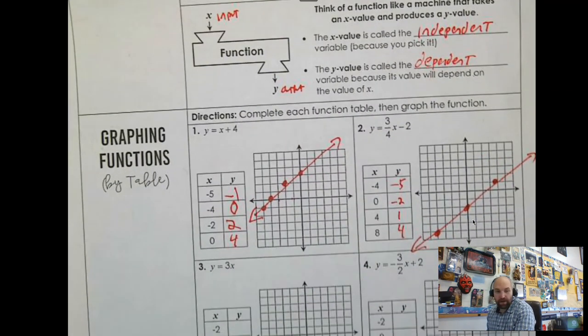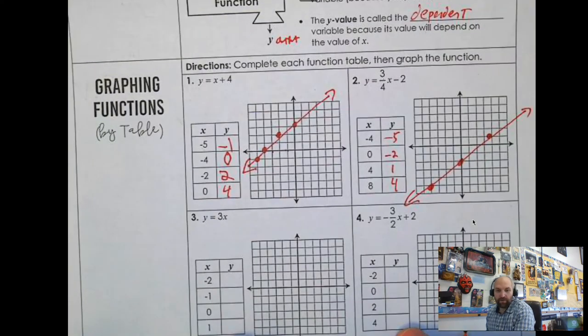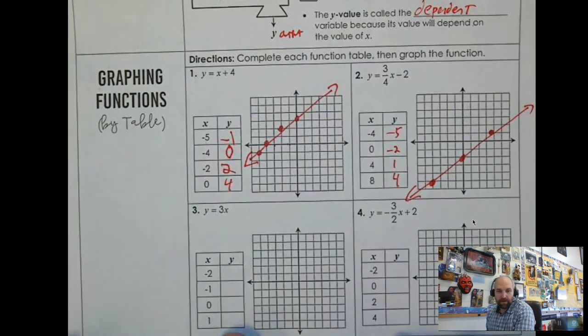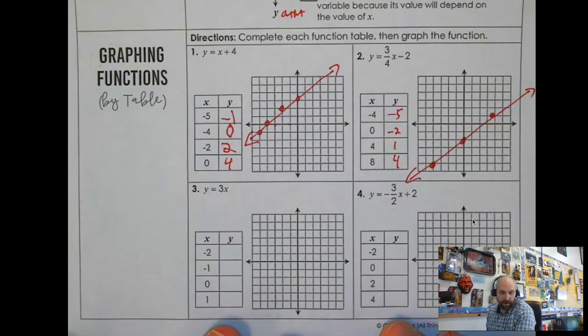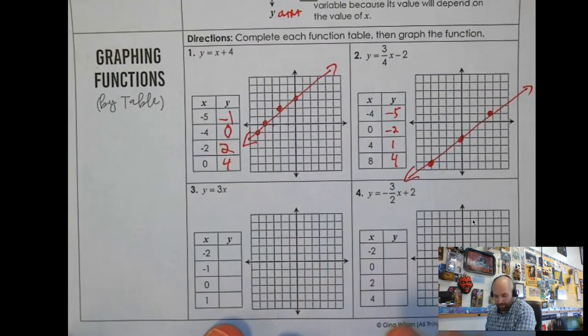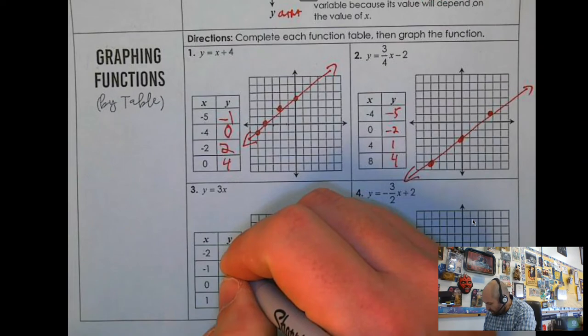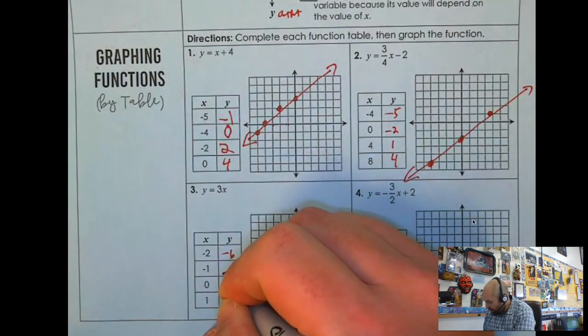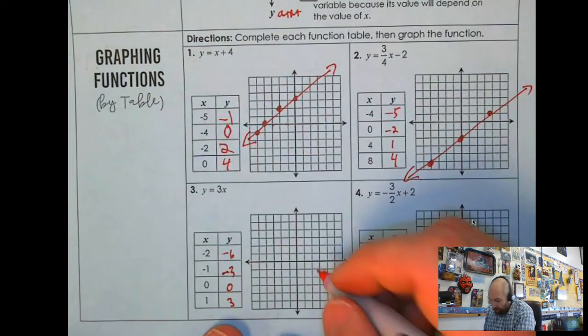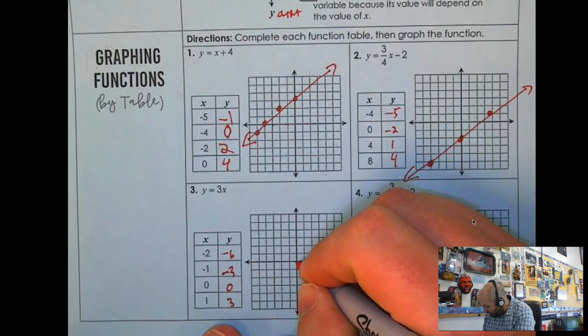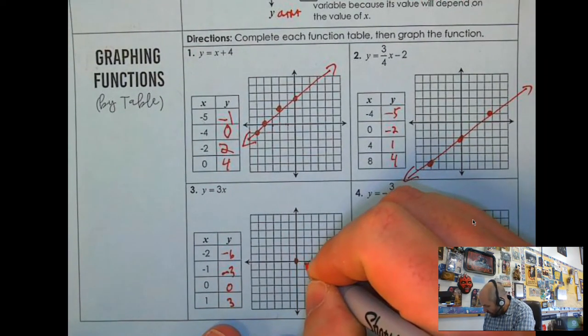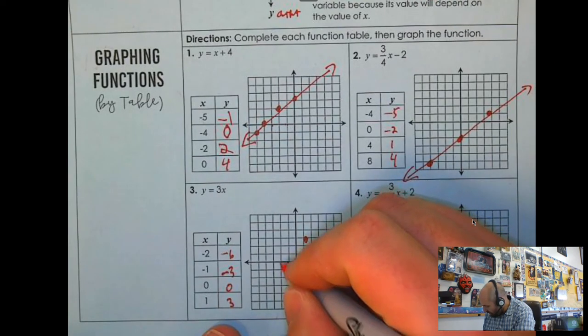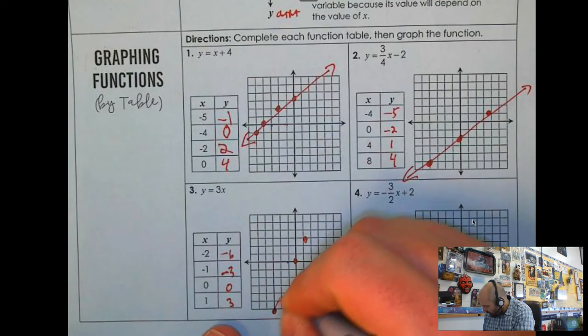I'm going to have you guys pause the video, do number 3 real quick. And I'll just give you the answers in a minute. So this one should be just negative 6, negative 3, 0, 3. And 0, 0, 1, 2, 3. And then negative 2, 1, 2 down to 6.